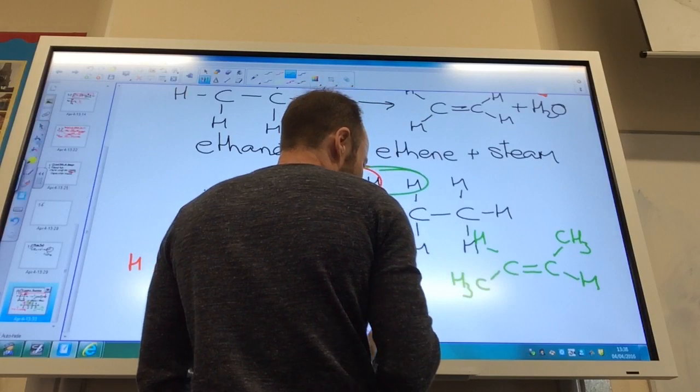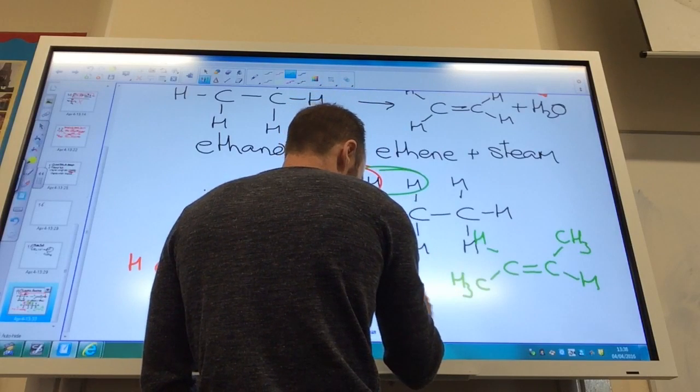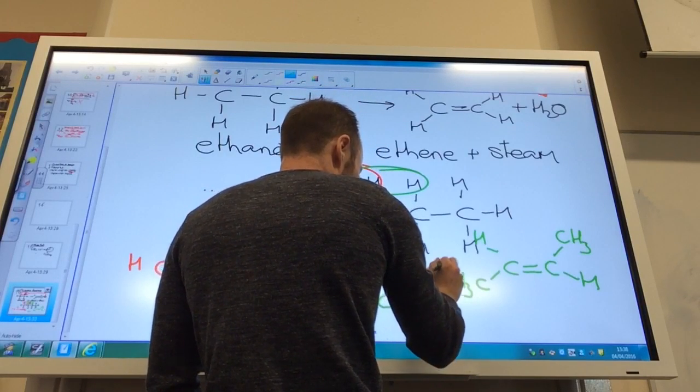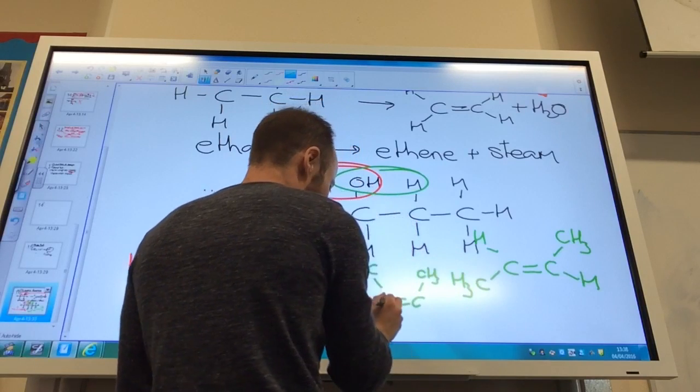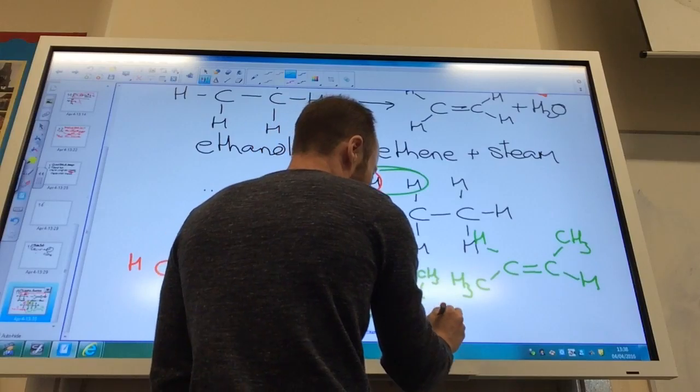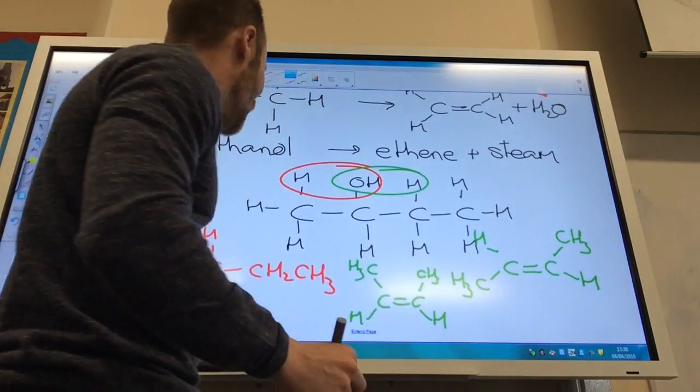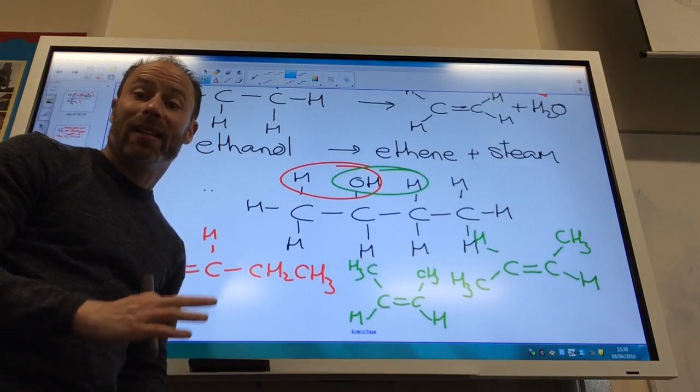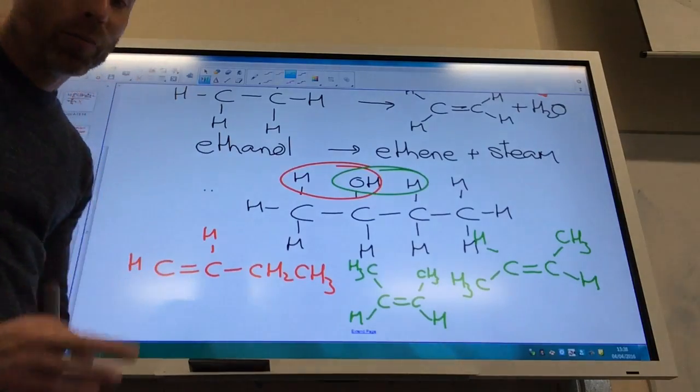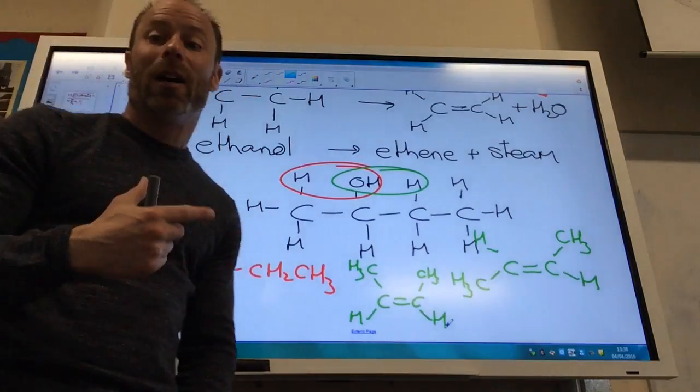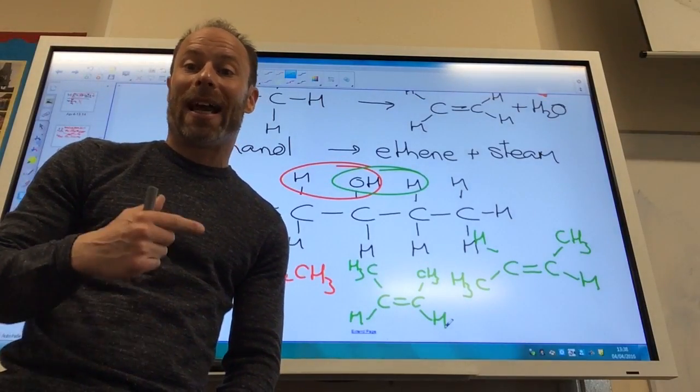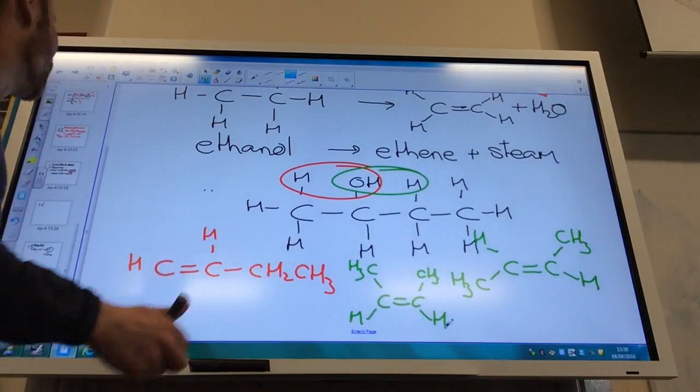So I'm making but-2-ene, but I could have both isomers produced like so. So from one reaction you can actually make three different products, three different isomers. But-1-ene, E but-2-ene and Z but-2-ene as well.